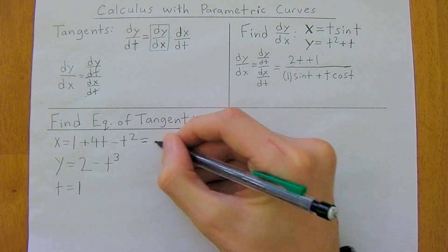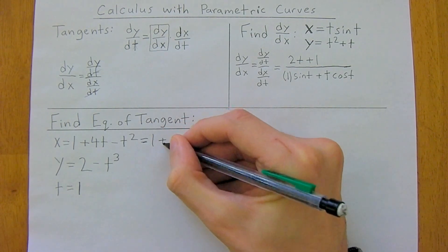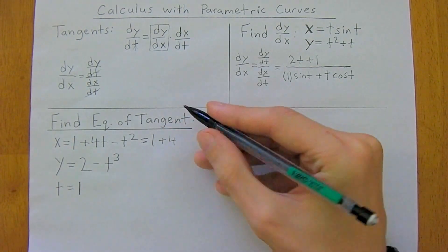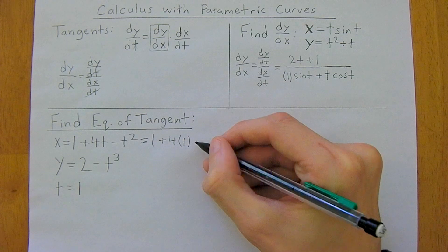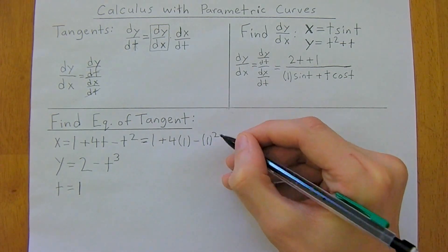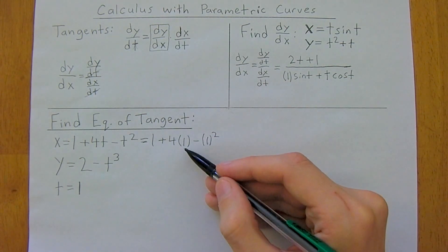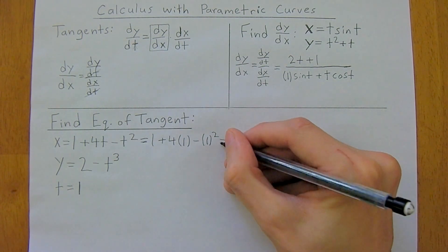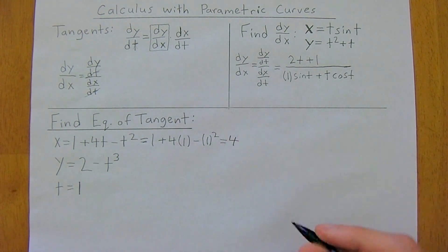And so let's do that. So x equals 1 plus 4 times 1 minus 1 squared. So 1 plus 4 minus 1. So our x coordinate is going to be 4.